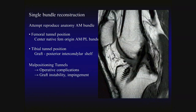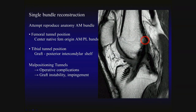In single bundle ACL reconstructions, surgeons generally attempt to reproduce the anatomy of the anterior medial bundle of the native ACL. To do so, the femoral tunnel is positioned at the center of the native femoral origin of the anterior medial and posterior lateral bands of the ACL, which on sagittal imaging approximates the intersection of the physeal scar and posterior cortex of the distal femoral metadiaphysis. The tibial tunnel is positioned such that the graft is aligned just posterior to the intercondylar shelf on sagittal imaging with the knee in full extension, to avoid mechanical impingement upon the graft with extension.